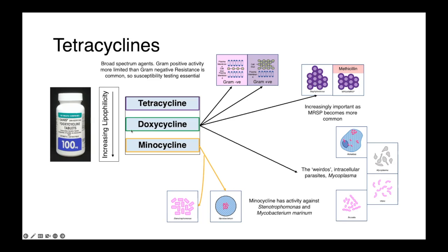Pharmacokinetically, as we move from tetracycline to doxycycline to minocycline, we see increasing lipophilicity. So these drugs are better able to penetrate our own cell membrane. Minocycline will get higher intracellular concentrations than will tetracycline, which is obviously a really important feature when trying to kill intracellular parasites.